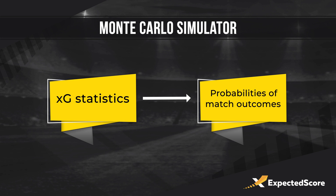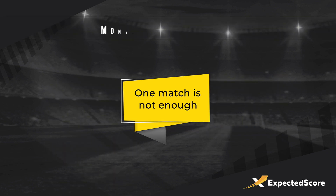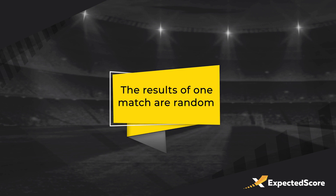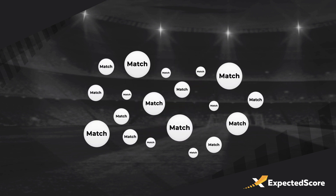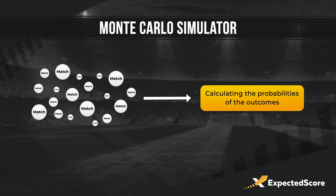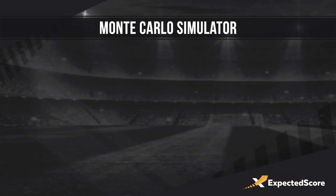It works the following way: we develop a model of a football match and generate the match using XG statistics. But one match is not enough — the results of a game are random, the same as in real life. That is why we generate not one match but a whole chain of matches. A large number of matches allows us to calculate the probabilities of each outcome. Moreover, with Monte Carlo we can calculate additional data — for example, how often a team will win when the match is drawn on the 18th minute.